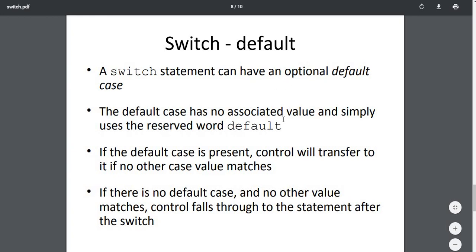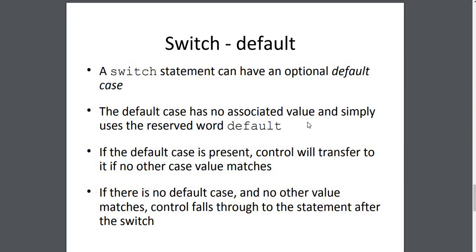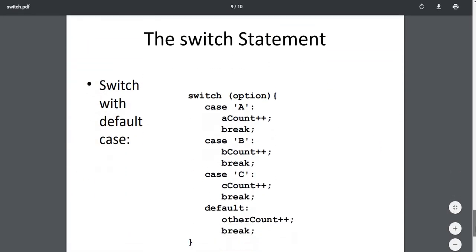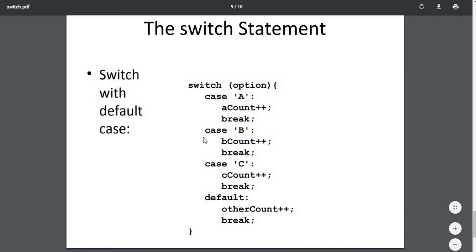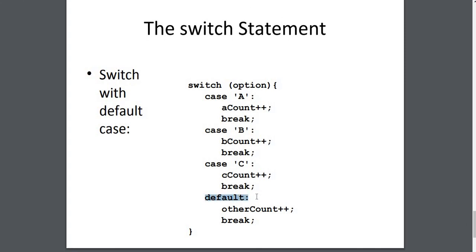A switch statement can have an optional default case. The default case has no associated value — unlike regular cases — and is simply used as a reserved keyword written in small letters. If default is not present and no case value matches the switch value, no output will be produced and the control falls through the statement after the switch. Here is an example with a default at the end of the switch statement. Thank you for watching, and please do subscribe to my channel.